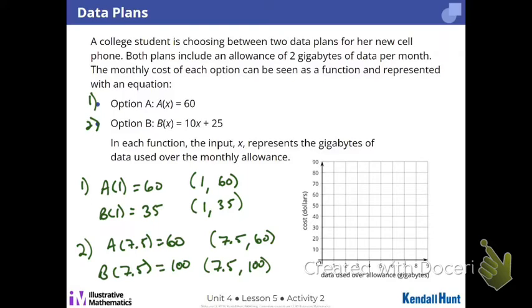So for question three, I'm going to write them up here by the functions. Next to a of x equals 60, who can tell me what that means in context? What does it mean in context? Ivy? No matter how many gigabytes you use, it's $60. Yeah, I'm going to say $60 for that unlimited plan. So it doesn't matter how many gigs go over, it's 60.